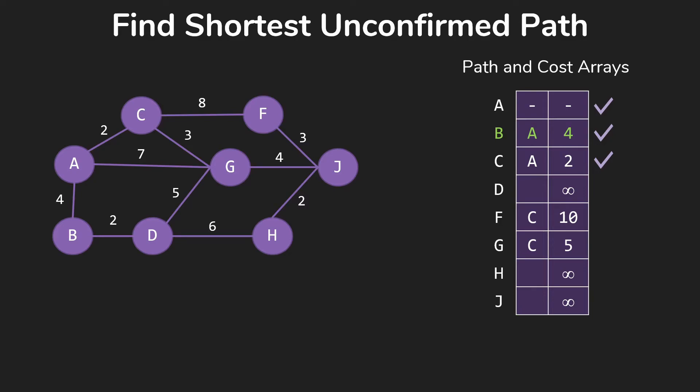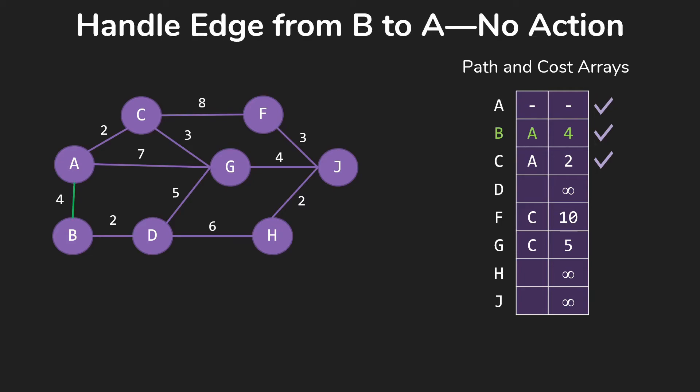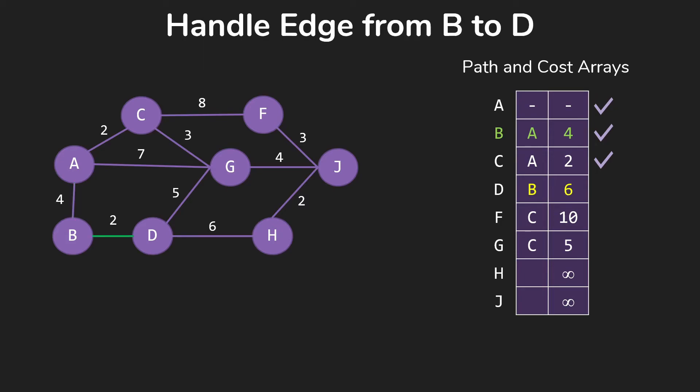So we find our next smallest path, and that's going to be to B through A for 4. So now we need to start checking edges out of B. Of course, there's nothing to do on the way to A. With the edge from B to D, we're going to record in our table that we can get to D through B for 6. That covers our edges from B.